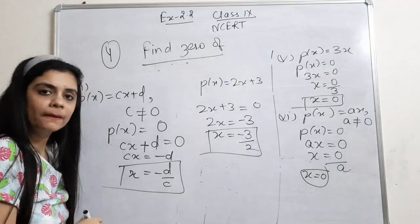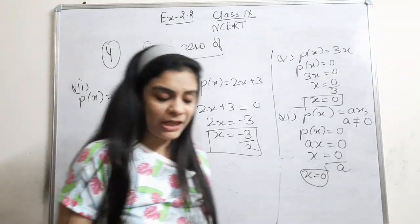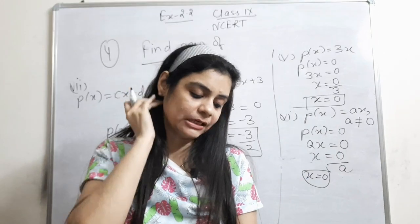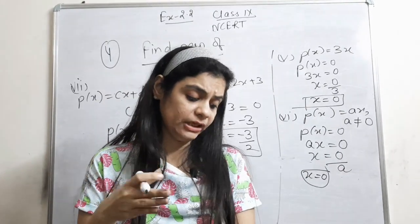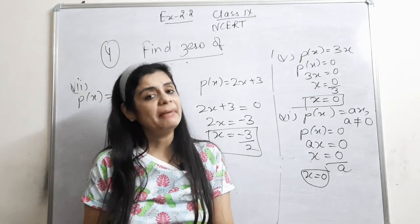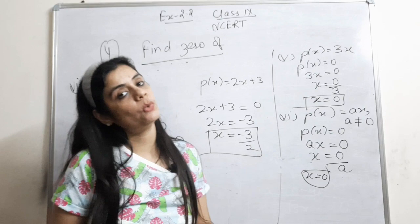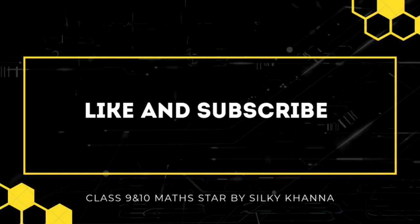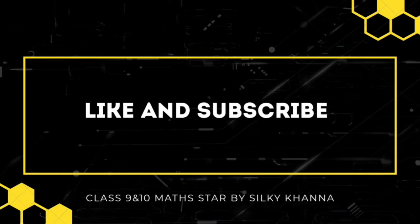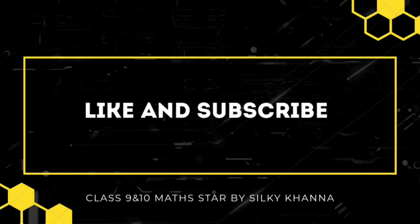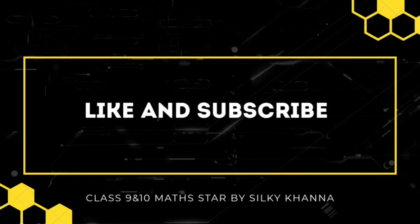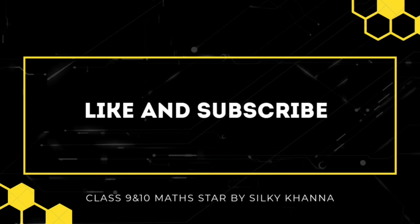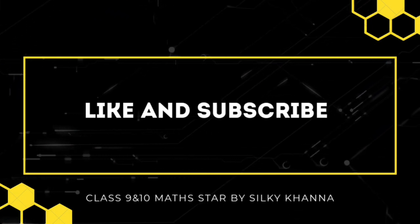So x = -d/c is the answer. This was the last question of this exercise. In my next video I'll be explaining the remainder theorem first, and then starting exercise 2.3. Before exercise 2.3, I'll explain the examples. Okay, till then bye bye.